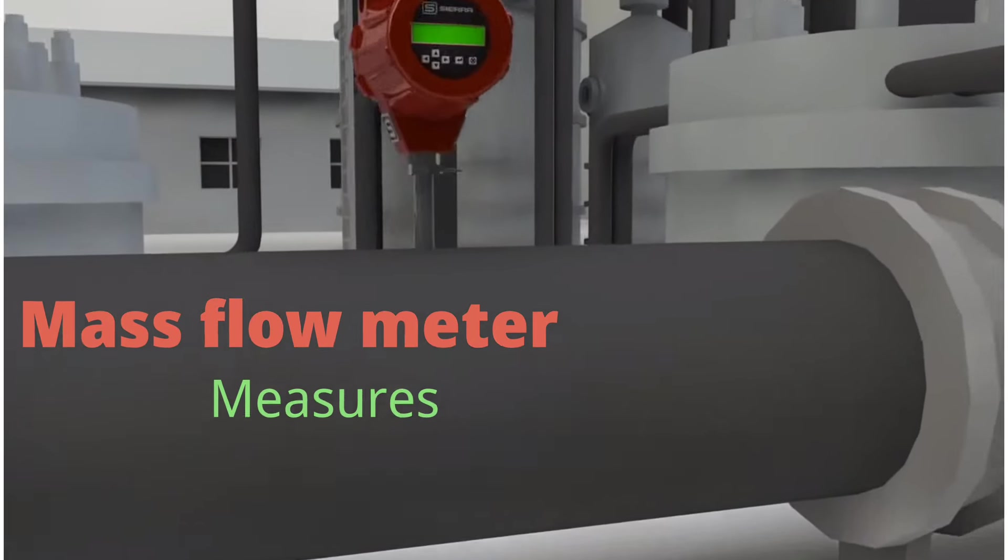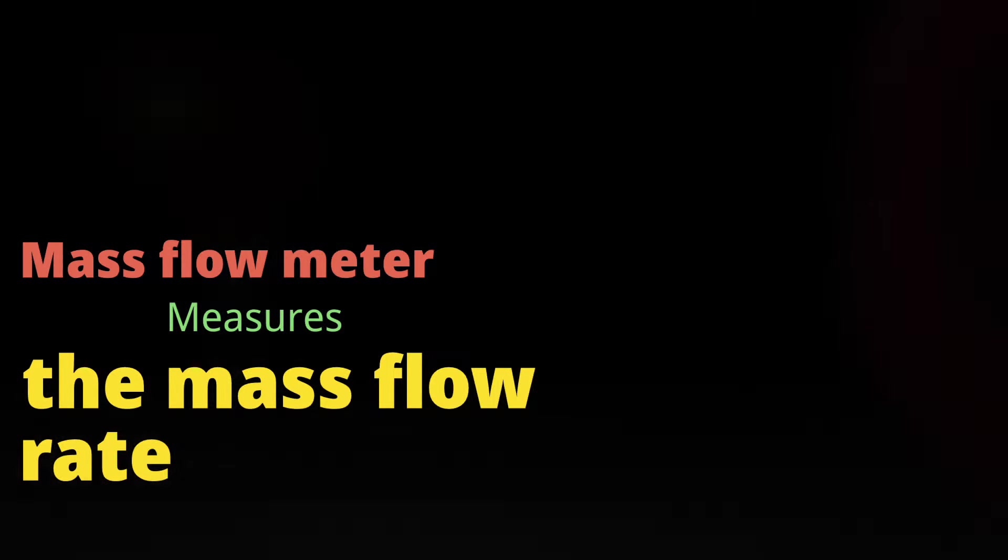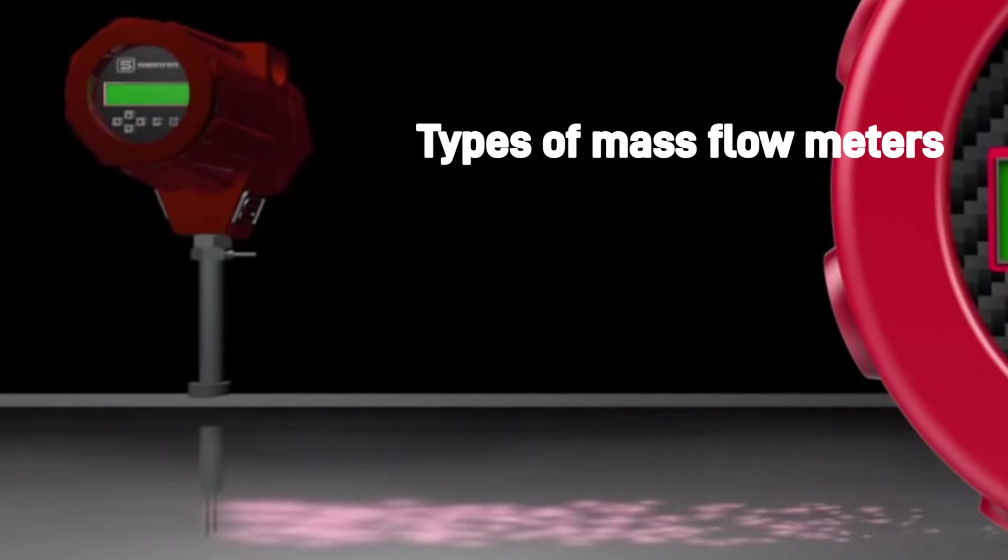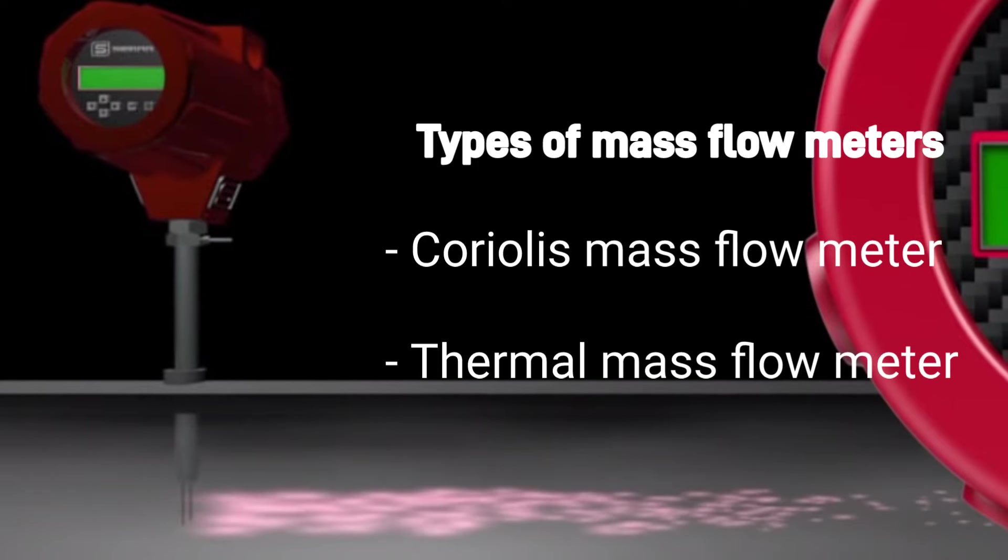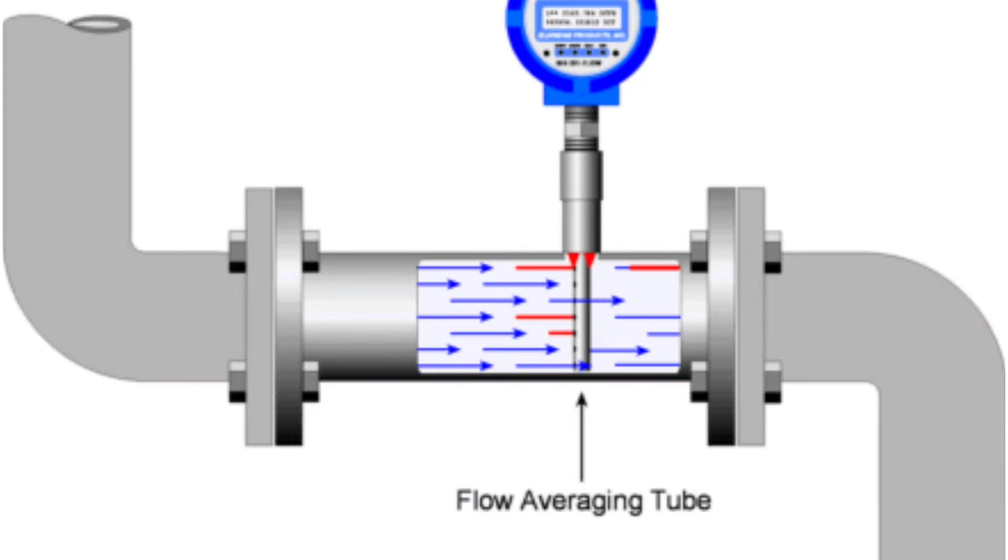Mass flow meters measure the mass flow rate that travels through a tube per unit of time. There are two types of mass flow meters: Coriolis mass flow meters and thermal mass flow meters. A brief description of these various types of flow meters, their application, advantages and disadvantages.